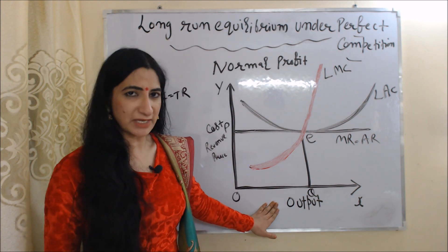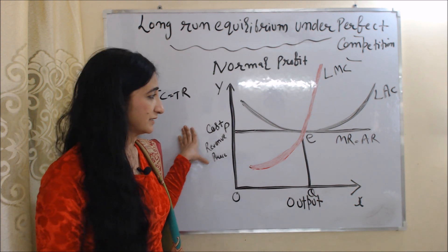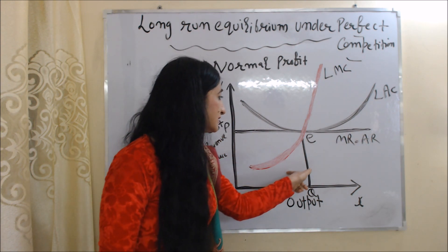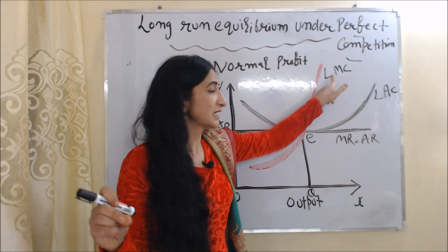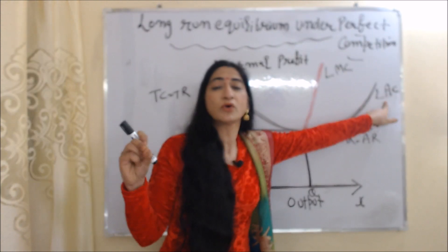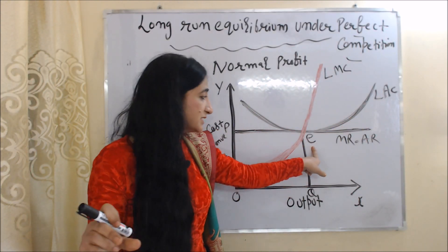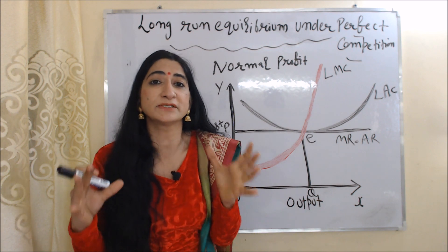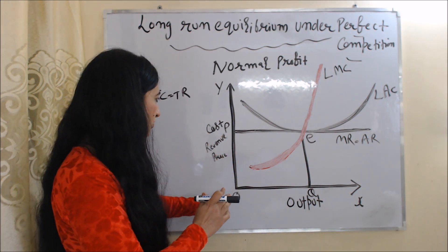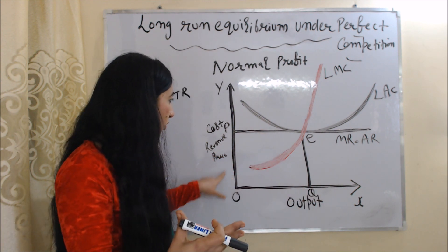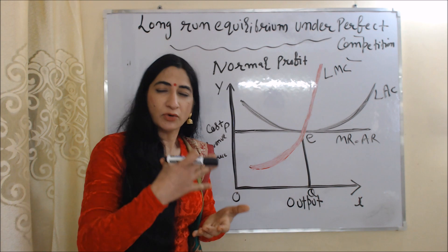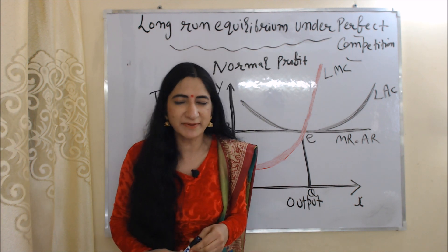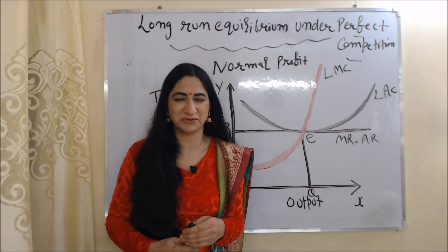Now we will see the diagram of normal profit in the long run under a perfect competition market. On the x-axis we have output, and on the y-axis we have cost, revenue, and price. The horizontal line represents MR and AR. The red curve LMC represents long-run marginal cost and the black curve LAC represents long-run average cost. At equilibrium point E, MC equals MR and MC cuts MR from below. Total cost is OPEQ and total revenue is also OPEQ, so E is the normal profit point. This concludes our discussion of short-run and long-run equilibrium under perfect competition.